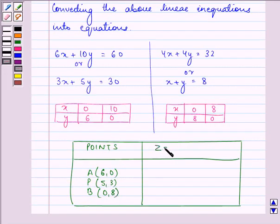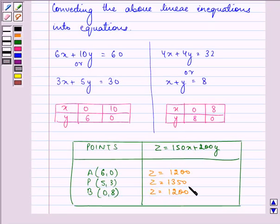Now, here we have the function Z as 150X plus 200Y. Now, substituting the values here, we have for this point the value of Z as 1200. Here we have the value of Z as 1350 and here we have it as 1200. So, we can clearly see that Z is maximum at point P whose coordinates are 5 and 3.